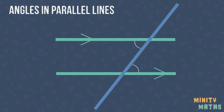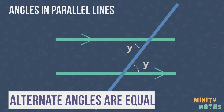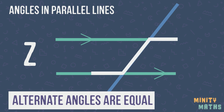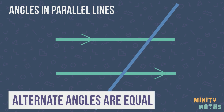Alternate angles are found on alternate sides of the line that crosses the pair of parallel lines — a transversal. These angles are always equal and are within a Z shape. However, the Z shape doesn't always look like a conventional Z, so these are ones to watch out for. Let's have a look at this example.